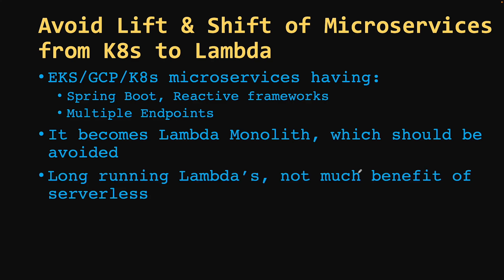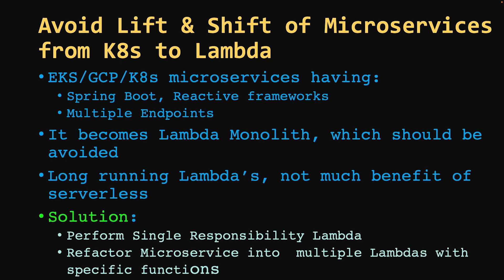Lambda is suitable for on-demand requests. If you handle everything inside your Lambda and keep the execution environment alive for its full lifecycle of 15 minutes, you're not using serverless the right way. The solution is to always implement the single responsibility principle — one Lambda, one responsibility — and to refactor one microservice into multiple Lambdas each with a specific function.